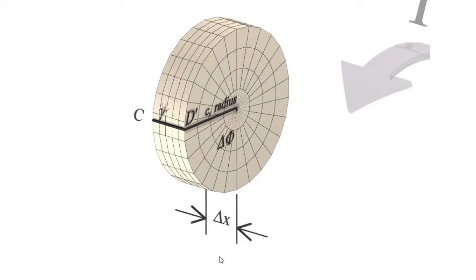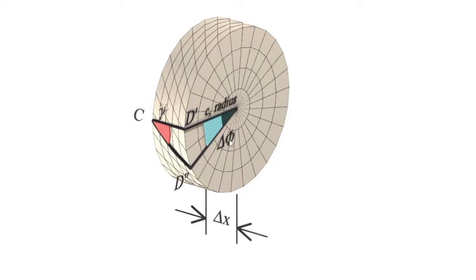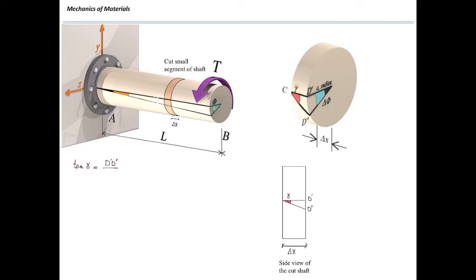Looking at the sideline of this small element: it was originally in one position, and because of deformation it has moved. The right part of the shaft is twisted slightly more compared to the left side. We see a change in angle, which I call gamma — that is shear strain. In this geometry, the tangent of gamma equals d-prime d-double-prime divided by length delta x. Since the angle is tiny and small, gamma equals the tangent of gamma.